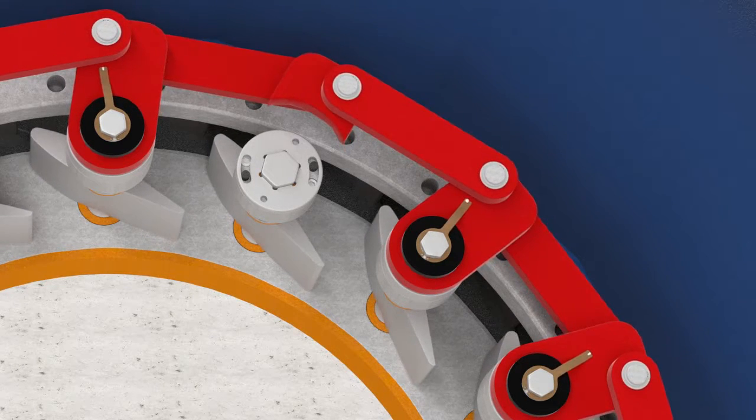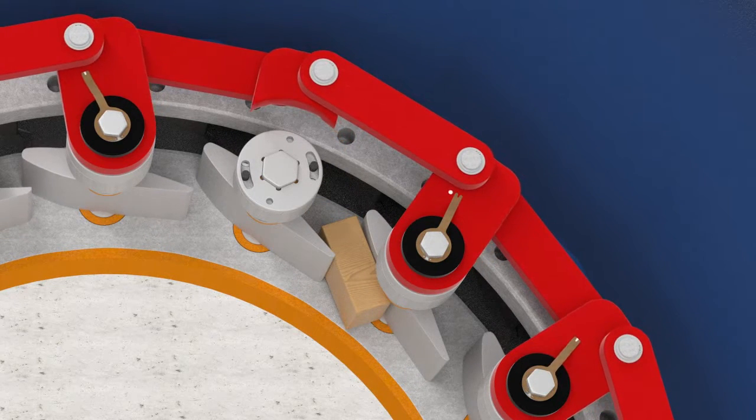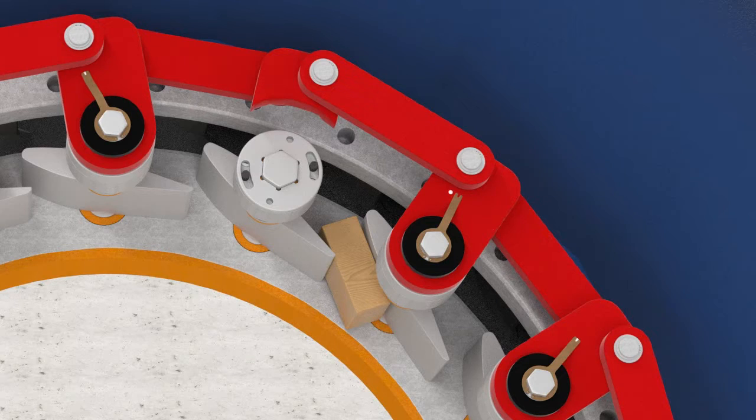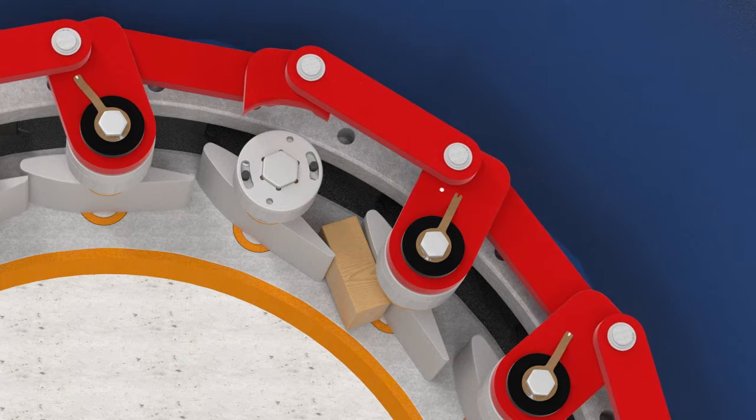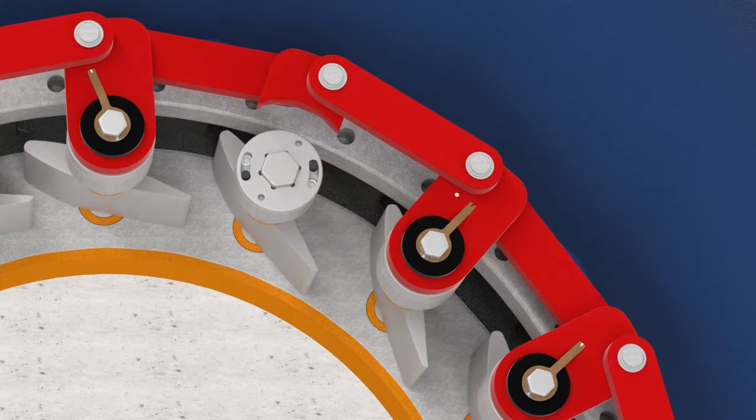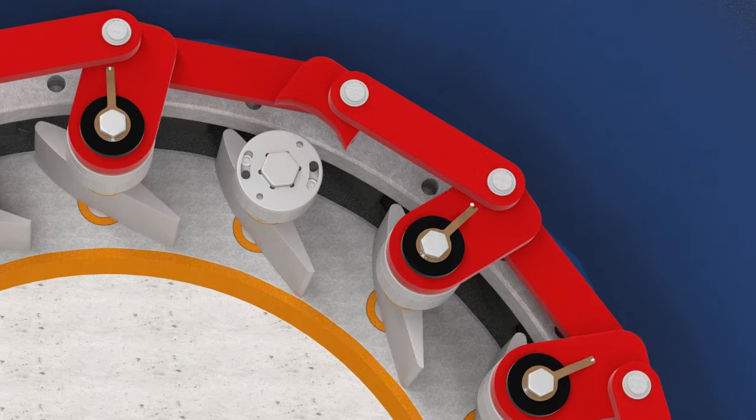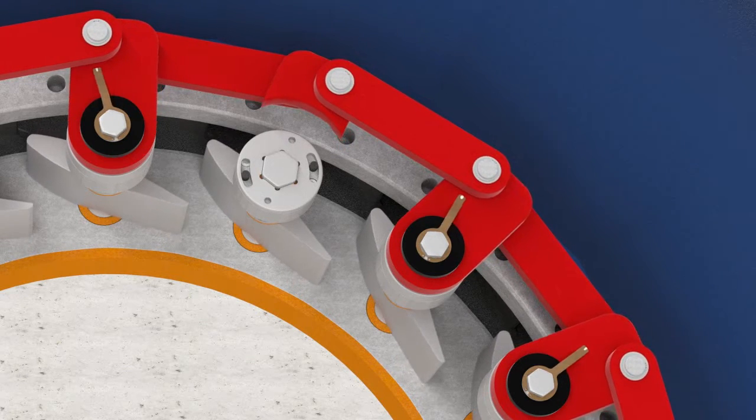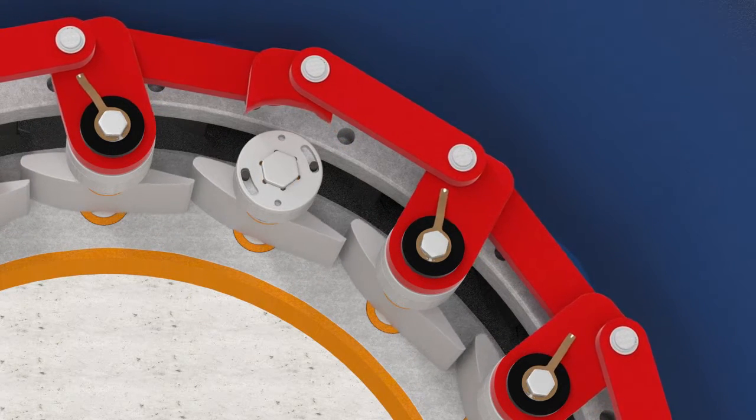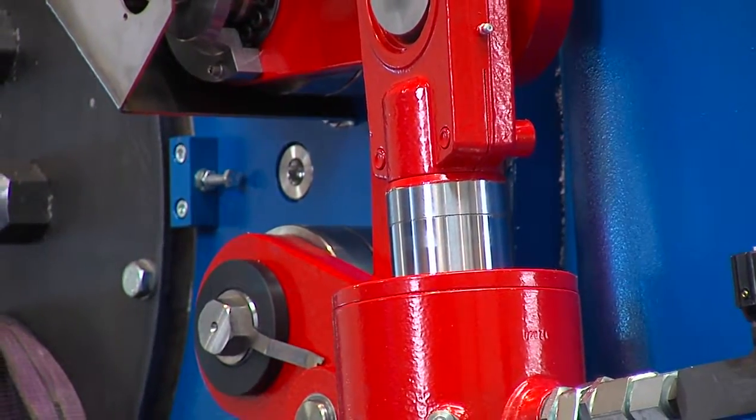During operation, foreign objects can sometimes be drawn into the flow of water through the turbine. In such a case, the guide vanes are designed to give way so that they are not damaged. An innovative mechanism enables the guide vanes to reset automatically after the foreign object has been removed. This mechanism is patent protected.